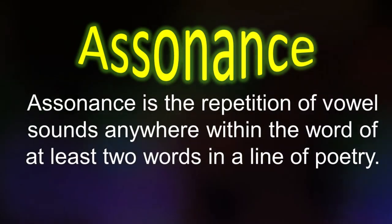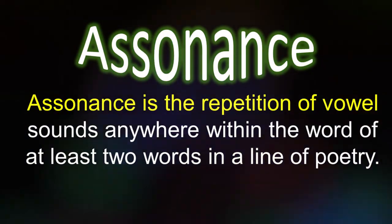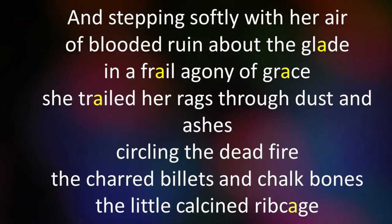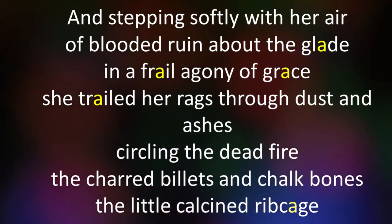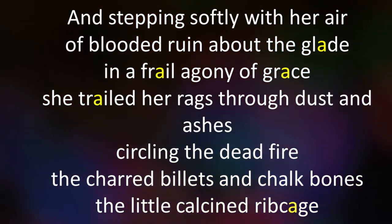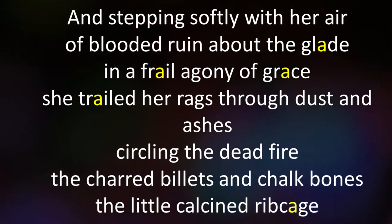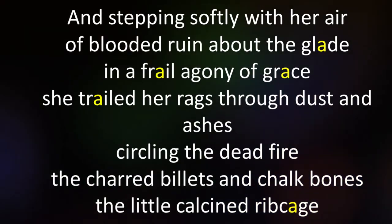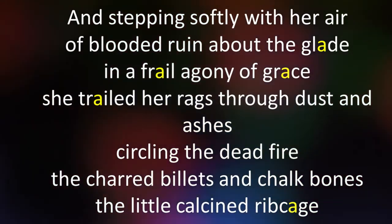The next sound device is called assonance. Assonance is the repetition of vowel sounds anywhere within the word of at least two words in a line of poetry. For example: 'And stepping softly with her air of blooded ruin about the glade, in a frail agony of grace, she trailed her rags through dust and ashes, circling the dead fire, the charred billets and chalk bones, the little calcined ribcage.' The words glade, frail, grace, and entrailed help set the chilling mood of the work, emphasized at the end with ribcage.